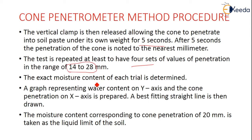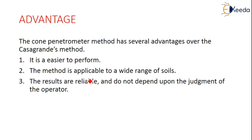The exact moisture content of each trial is calculated. A graph of water content on the y-axis and cone penetration on the x-axis is prepared, and a best-fitting straight line is drawn. The moisture content corresponding to a cone penetration of 20 mm is taken as the liquid limit. The advantages of this test are that it is easier to perform, applicable to a wide range of soils, and the results are reliable and do not depend on the judgment of the operator.